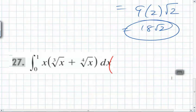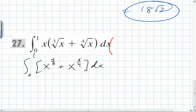Distribute. Please distribute. So what do you end up with? The integral from 0 to 1 of x to the what power first? Cube root is what power? 1 third plus 1 is 4 thirds plus x to the 5 fourths dx. And now you're just integrating each of these. You know that the power increases by 1.